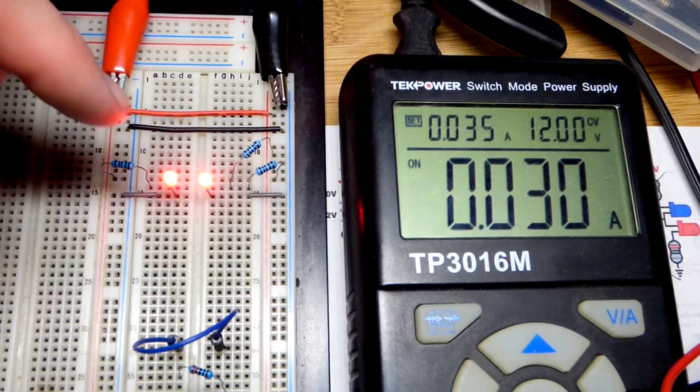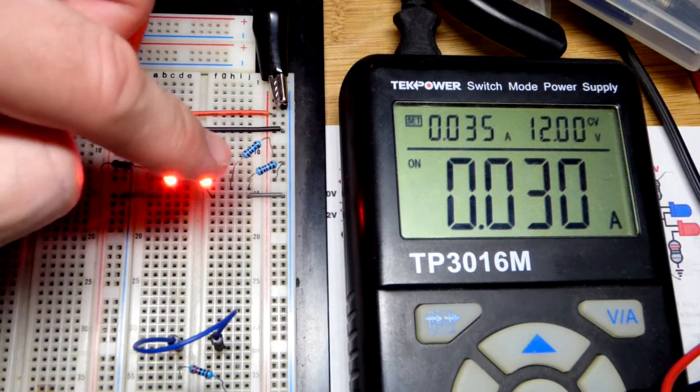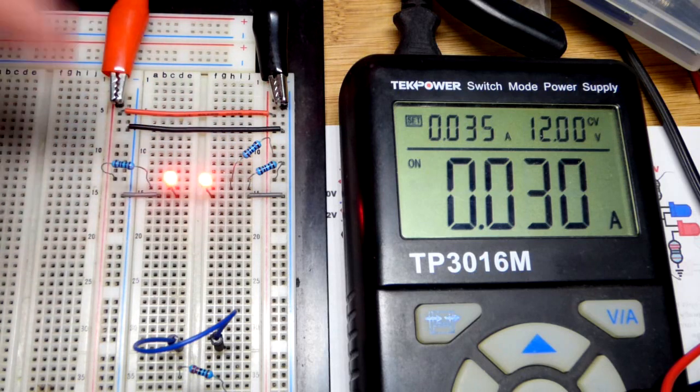We have 10 milliamps going through this LED with just one protective resistor and 20 milliamps of current going through that one.